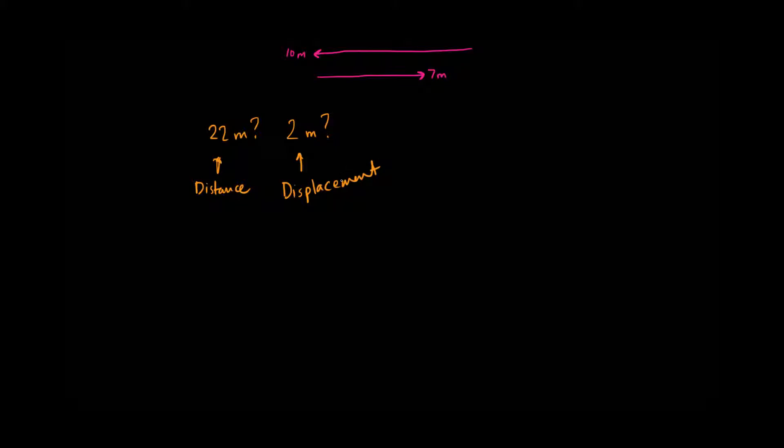Now, another way to interpret it is that distance is the total sum of all movement, while displacement is just the net movement.